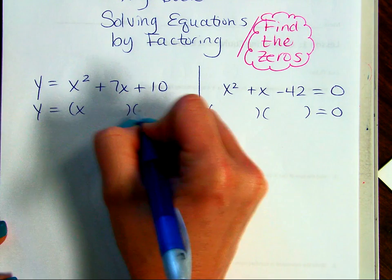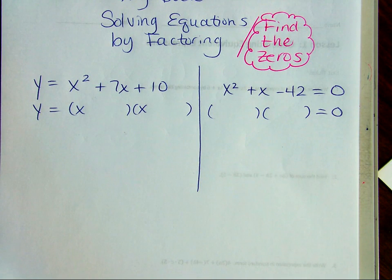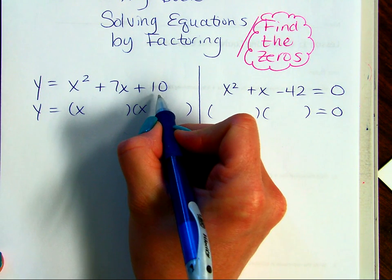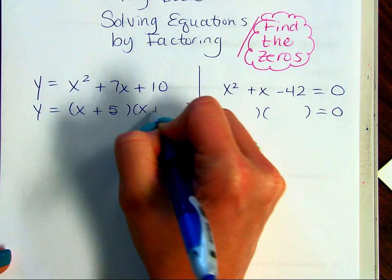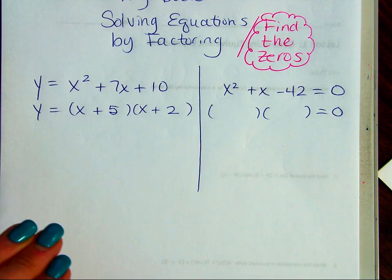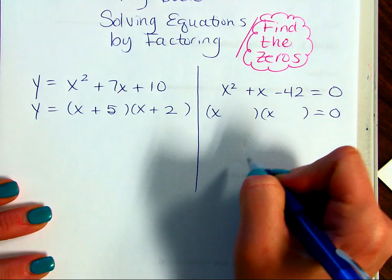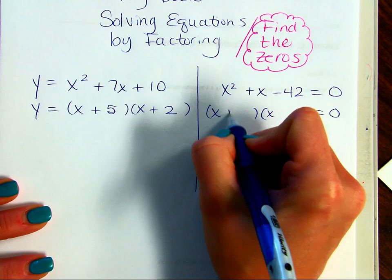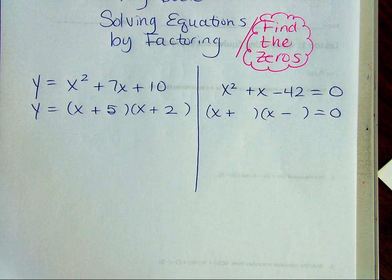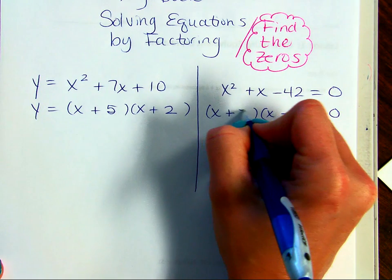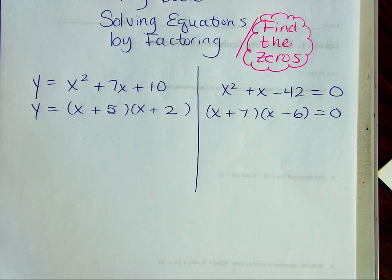Looking at x squared plus 7x plus 10: x times x gives me x squared, no coefficient, not perfect squares — basic factoring. What two numbers multiply to give me 10 but add to give me 7? That's positive 5 and positive 2. For the second one, x squared plus x minus 42: the product is negative, so I have a positive times a negative. My sum is positive 1, so the factors are 6 and 7, with 7 going with the positive.